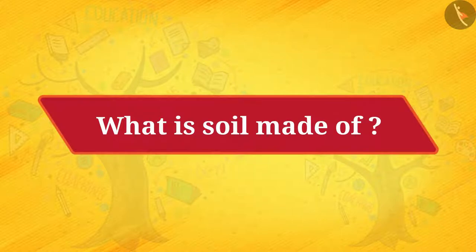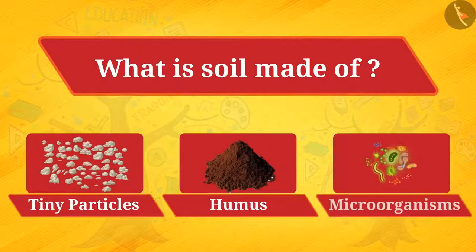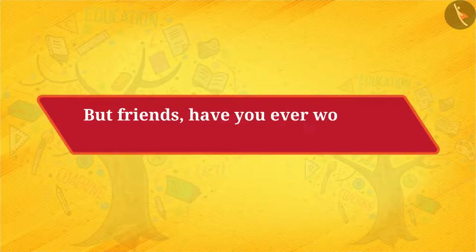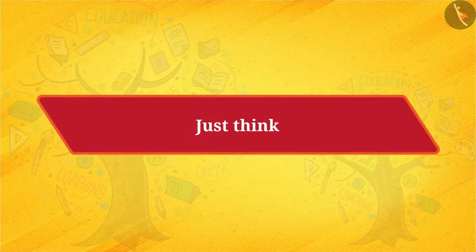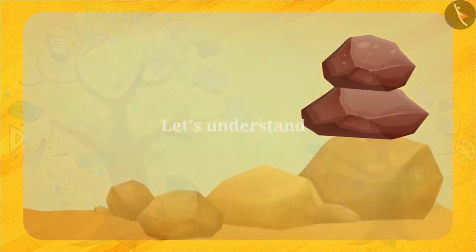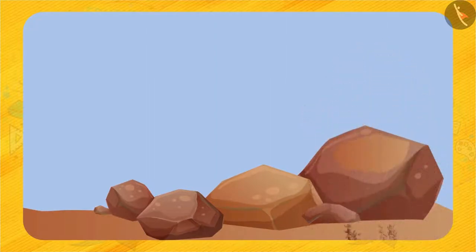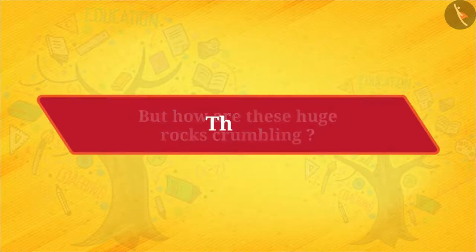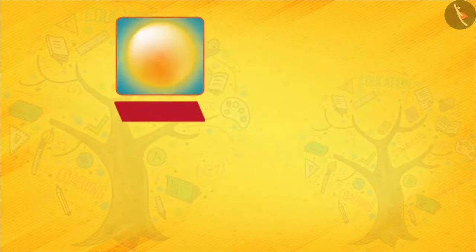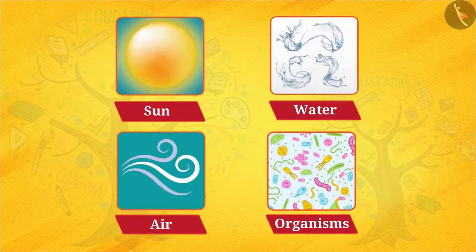So the soil is made up of tiny particles, humus, and microorganisms. But have you ever wondered where these small particles come from? You must have seen huge rocks. These rocks break into small particles and later form the soil. But how are these huge rocks crumbling? These big stones break under the influence of Sun, water, air, and living organisms. Let's see how.